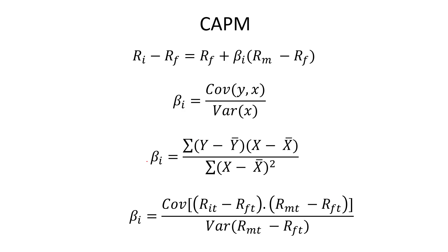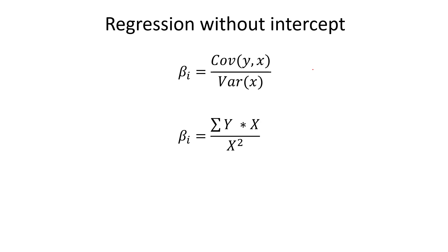In the context of CAPM, Y is R_i minus the risk-free rate — instead of the mean, we use the risk-free rate. X is the market return minus the risk-free return, and we divide by the variance of market return minus the risk-free rate. There is one more important concept: regression through origin, also called regression without an intercept term. When we have a regression without an intercept, the measurement of the beta coefficient is different.